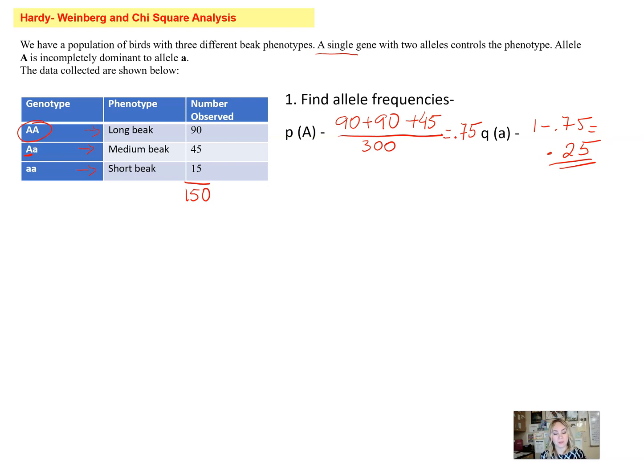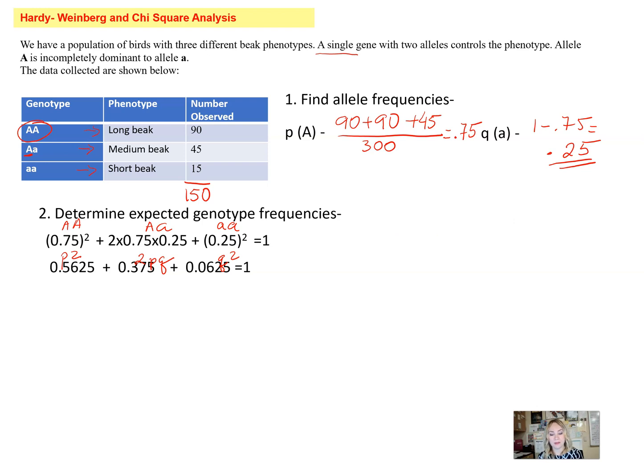The next thing we need to do is determine the expected genotype frequencies under Hardy-Weinberg equilibrium. That means we have to take the allele frequencies that we just found and plug them into the Hardy-Weinberg equation. This is my big A big A—it's basically p squared. Then we have big A little a composition here, that's the 2pq, and then we have little a little a, that's your q squared. Once we do the math, we have the frequencies now that are expected under Hardy-Weinberg equilibrium.